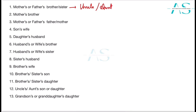If I just say uncle or aunt, there can be confusion about whether it's from the father's side or the mother's side. So to clarify, I use the keywords maternal and paternal. The keyword maternal is used to denote the mother's side of the family, and the keyword paternal is used to denote the father's side of the family.